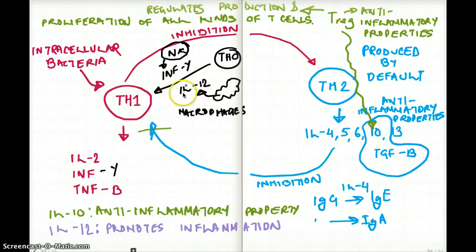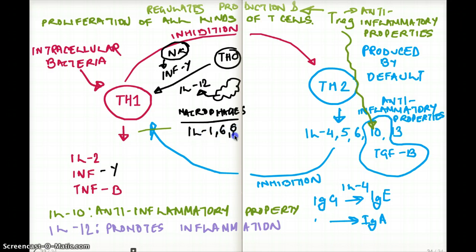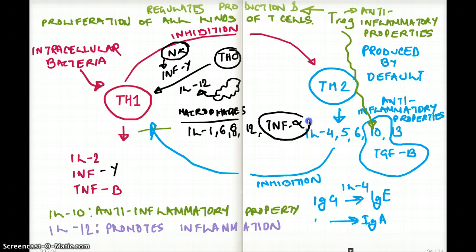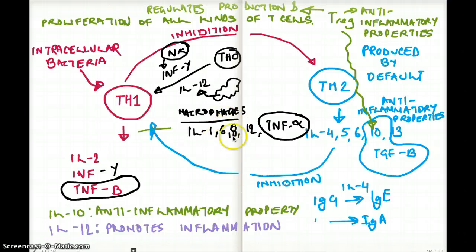IL-12 is not the only interleukin made by macrophages. Macrophages also produce IL-1, 6, 8, 12, and TNF-alpha. Note that macrophages make TNF-alpha, while T helper 1 cells make TNF-beta. Also, IL-6 is produced by both T helper 2 cells and macrophages. Memorizing these interleukins is important so you can navigate through questions easily.